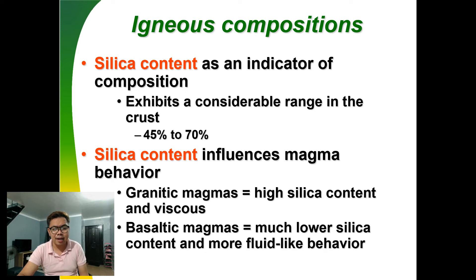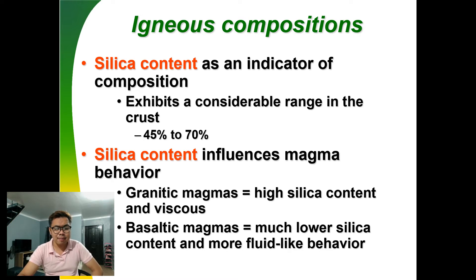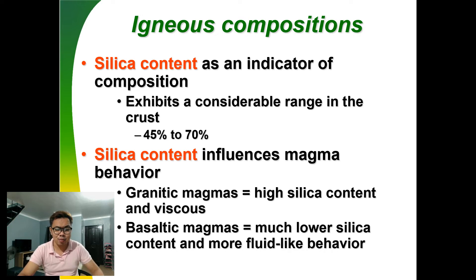Using silica content as an indicator: a silica content of 45% to 70% shows the igneous rock represents a considerable range of crustal compositions. Silica content also influences magma behavior — granitic magmas have high silica, while basaltic magmas have much lower silica. Different methods can be used to determine composition, including silica content and how silica content influences magma behavior.